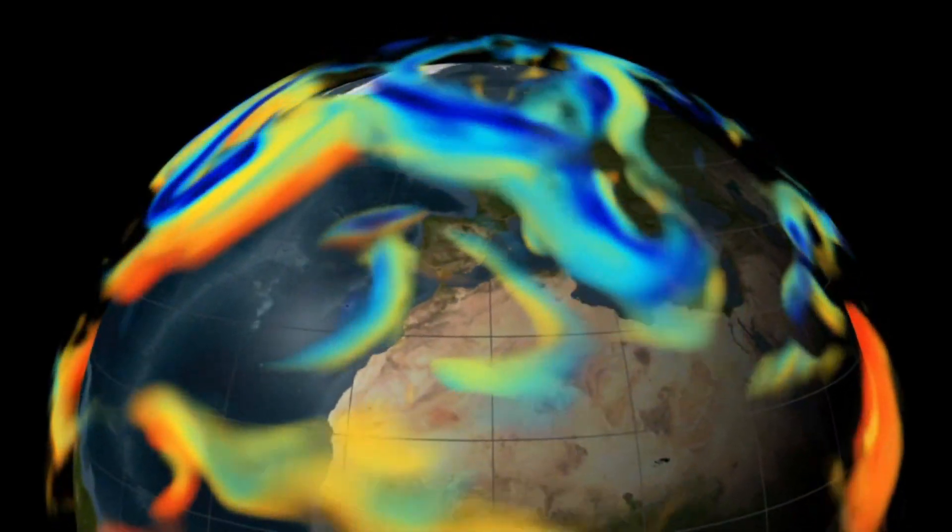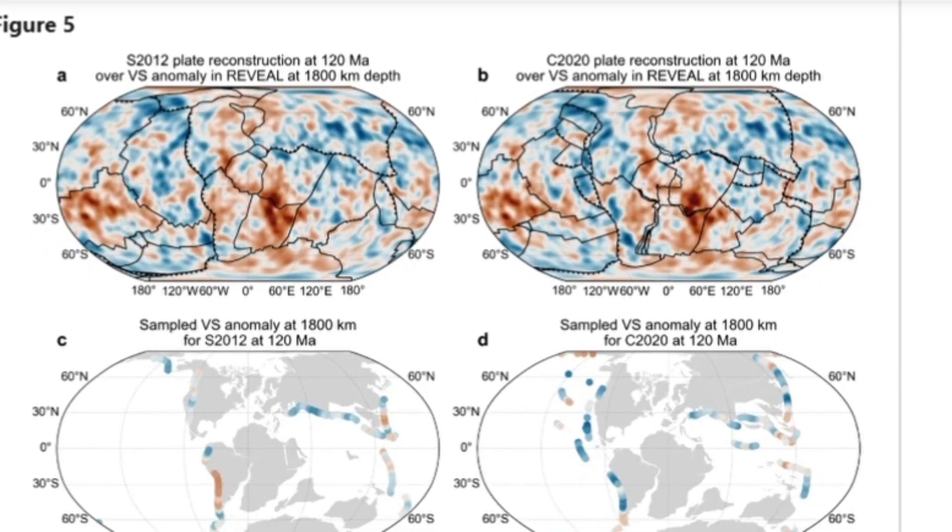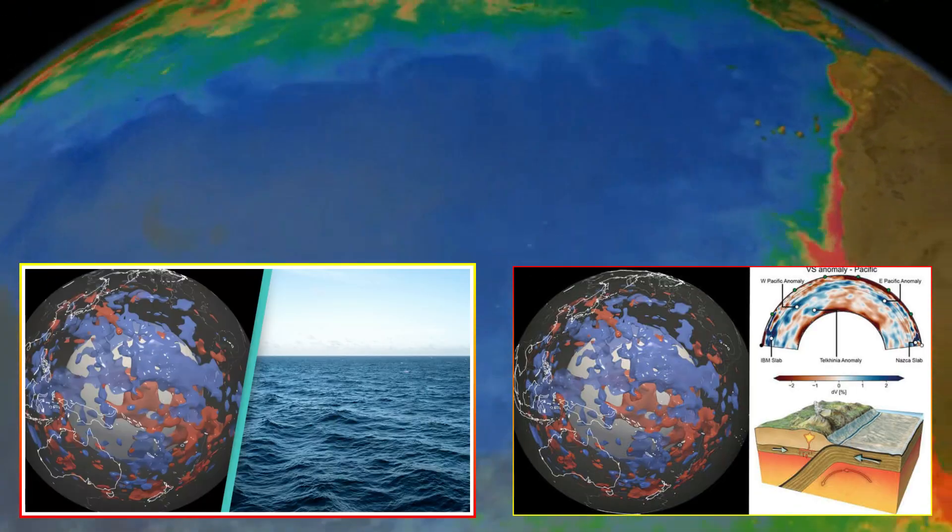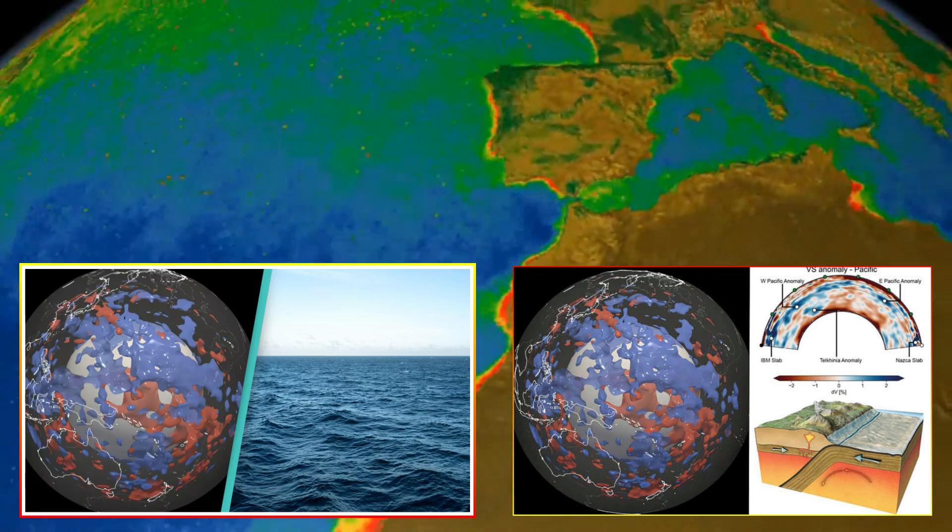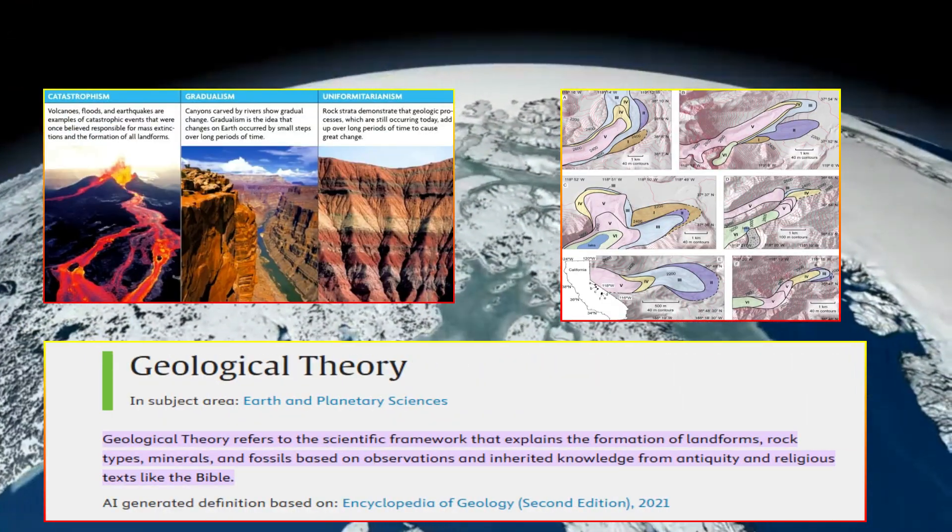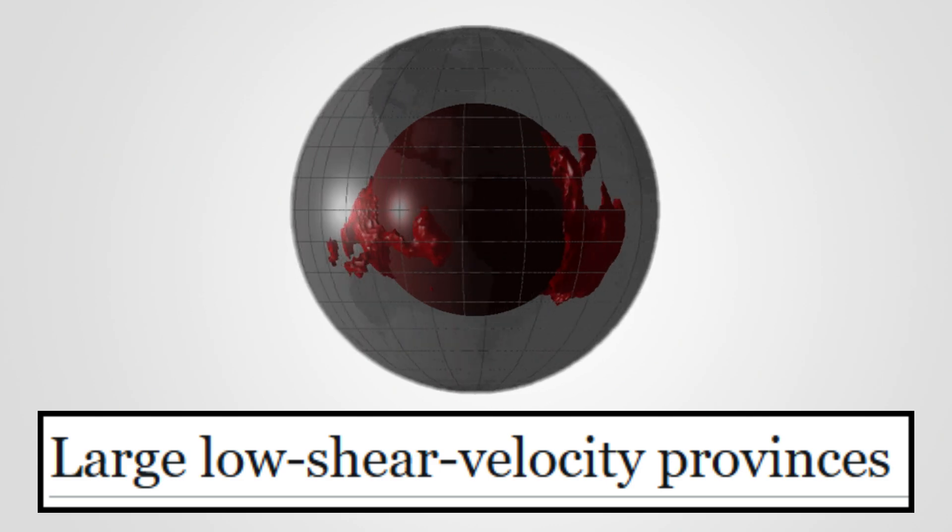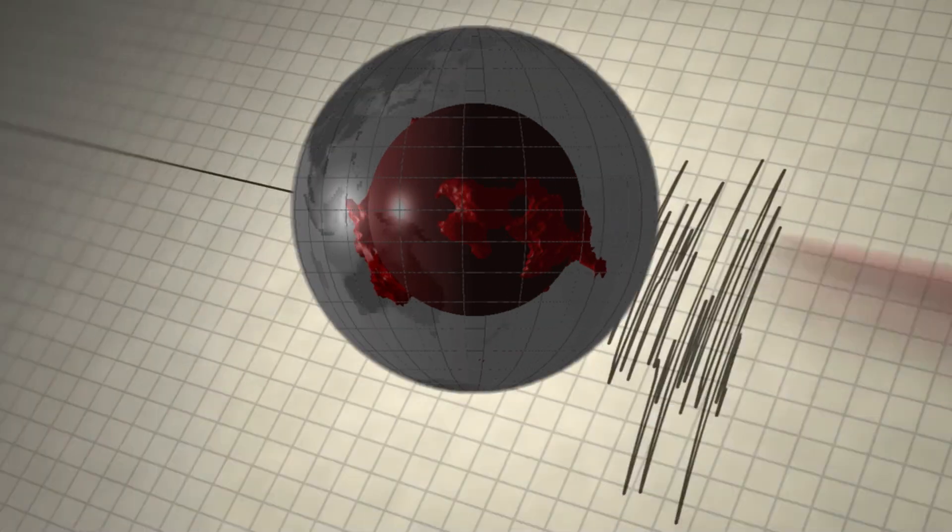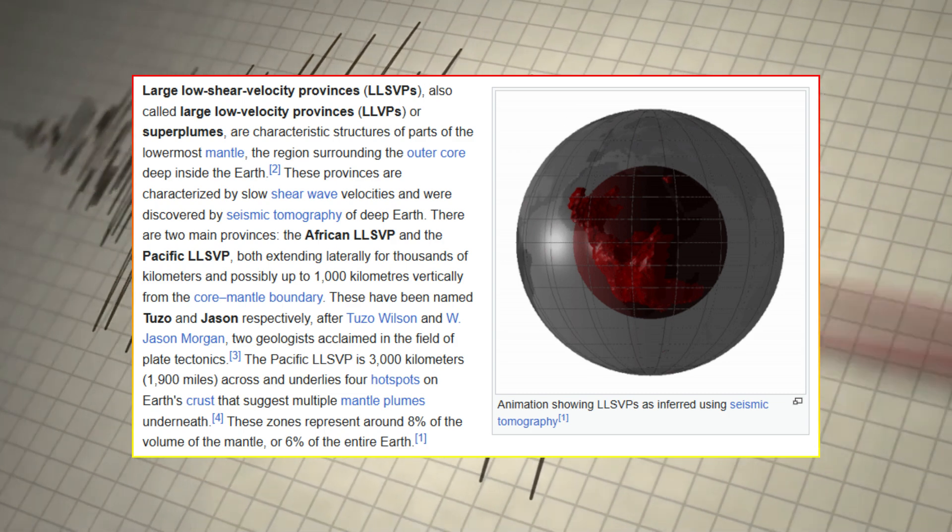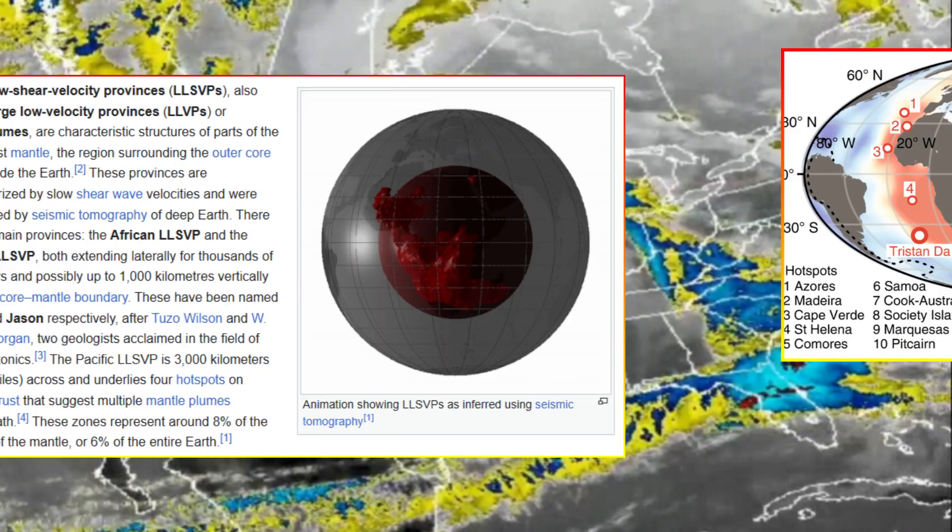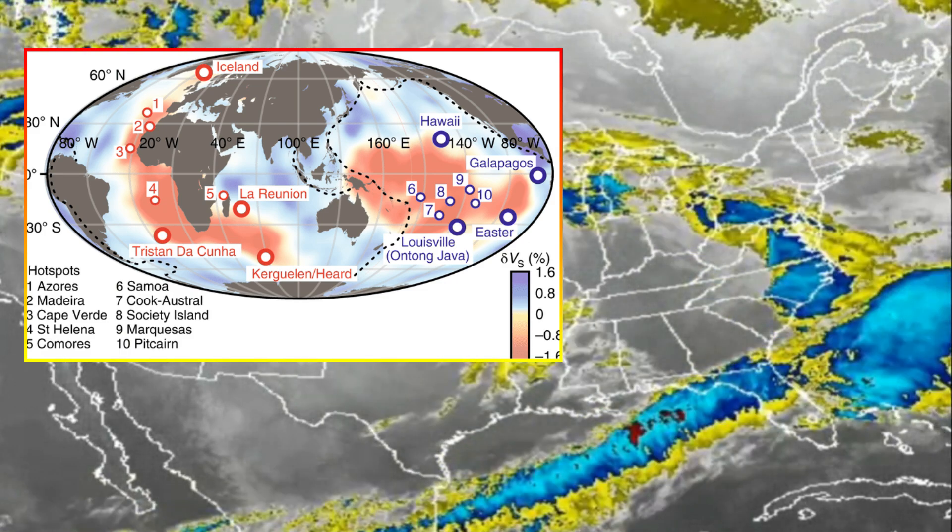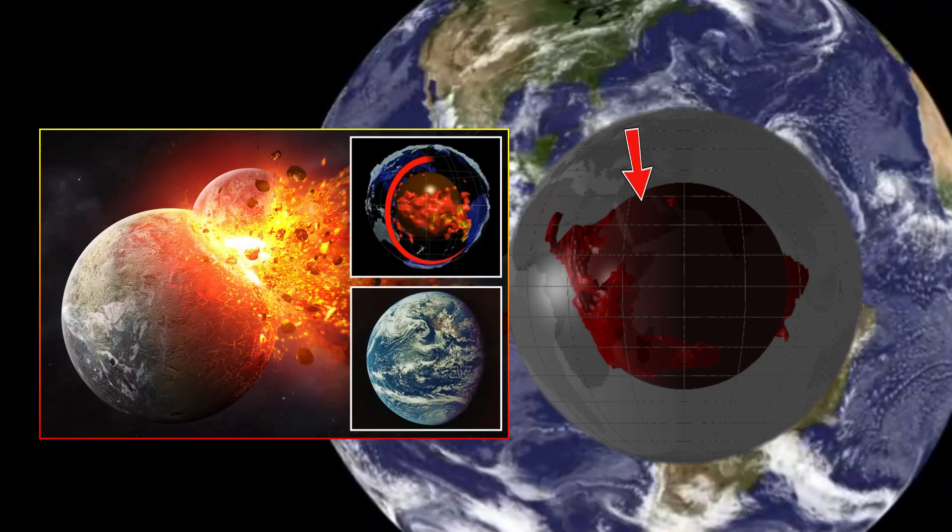The impact on seismic activity and volcanoes. These hidden structures could also have profound implications for our understanding of seismic activity and volcanic eruptions. Seismic waves, which travel through Earth's interior, give us valuable clues about where geological processes are taking place. The fact that these anomalies are so massive and located beneath tectonically stable regions raises important questions.